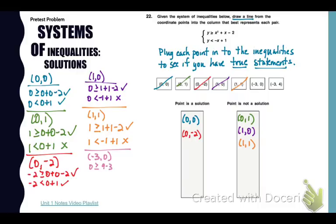And now the point (-3,0) in pink. So I get 0 is greater than or equal to -2. And 6 minus 2 is 4. 0 is greater than or equal to 4. And that is not true. And now finally the point (-3,4). I get 4 is greater than or equal to 4. And then 4 is less than 4 which is not true. So we have two solutions and four that are not solutions.